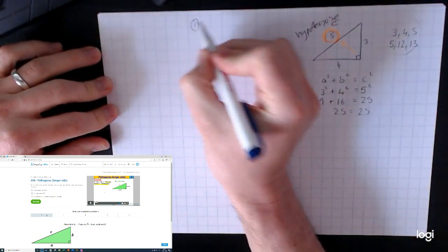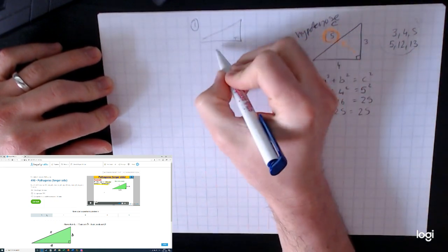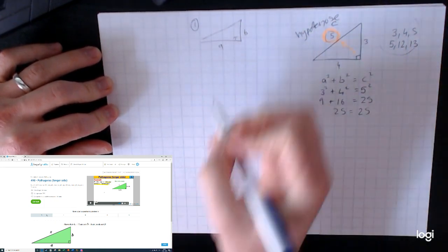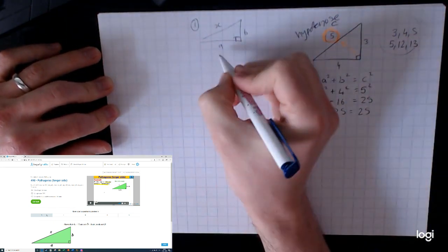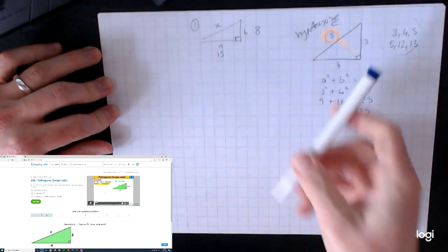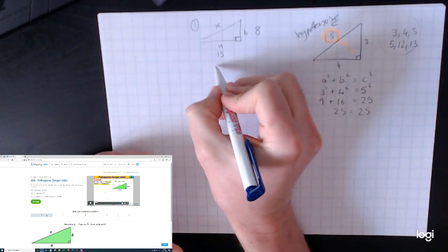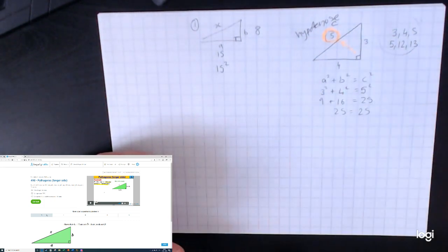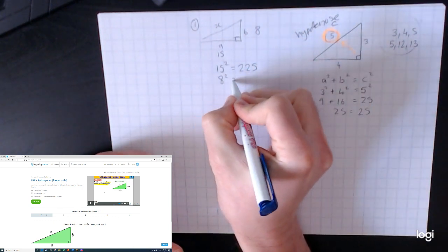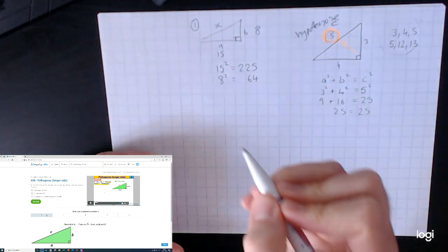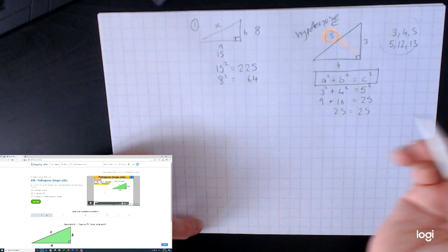Very simple. The first one that pops up on video 498 is where it's labeling a, labeling b, labeling x, it's telling you that that's a right angle. It says given that a is 15 and that b is 8, find x.